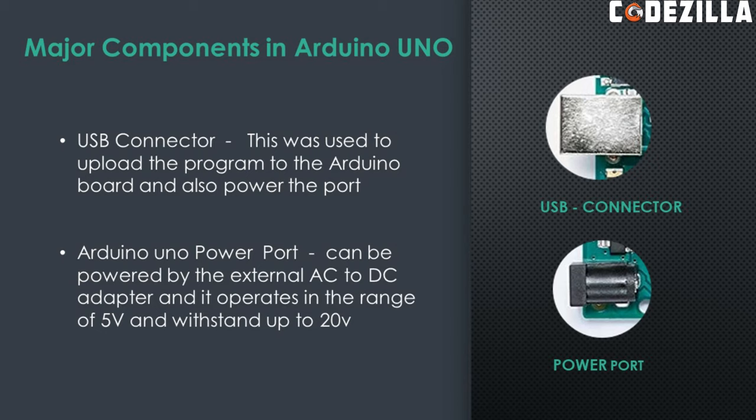Let's see the major components in the Arduino Uno. First, the USB connector. This is used to upload the program to the Arduino board and also to power the board with the help of a USB cable.